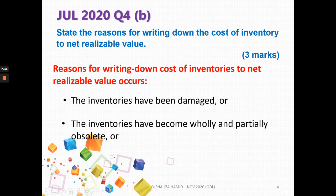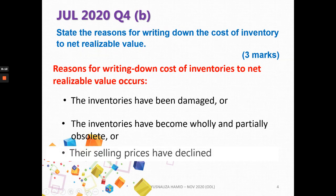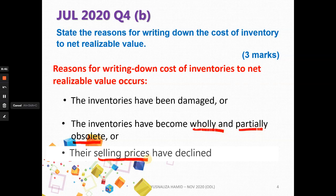Other reasons for a write-down include inventories that have become wholly or partially obsolete — no longer demanded, with no way to sell them. Additionally, the selling price may have declined — you cannot sell at the price you used to sell and may have to sell at a much cheaper price. So the reasons for writing down are: damage, wholly or partially obsolete, and a decline in selling price.